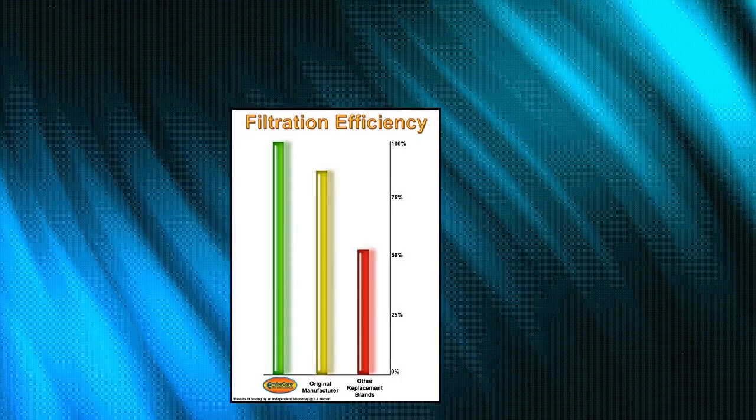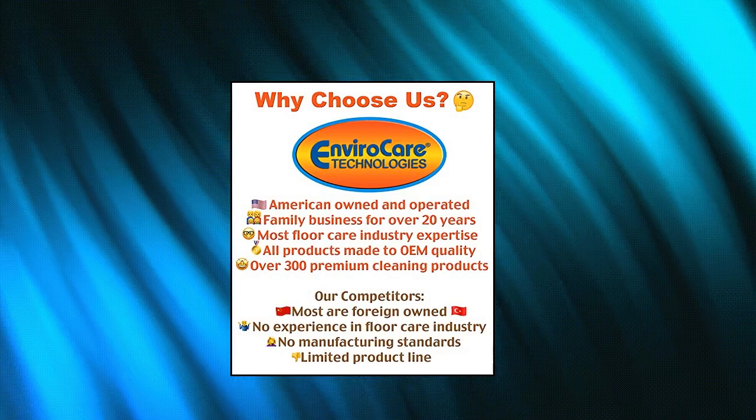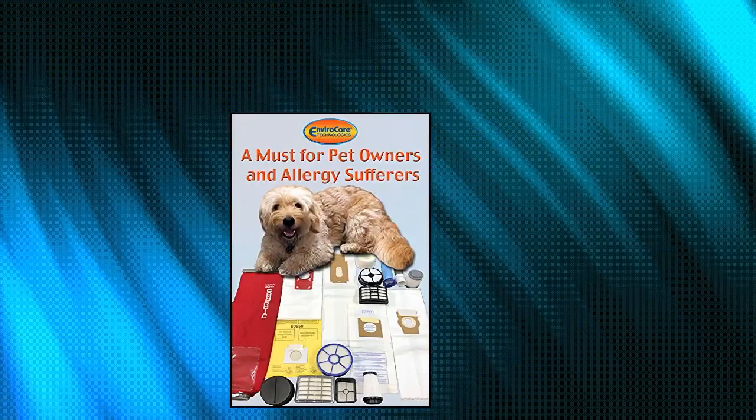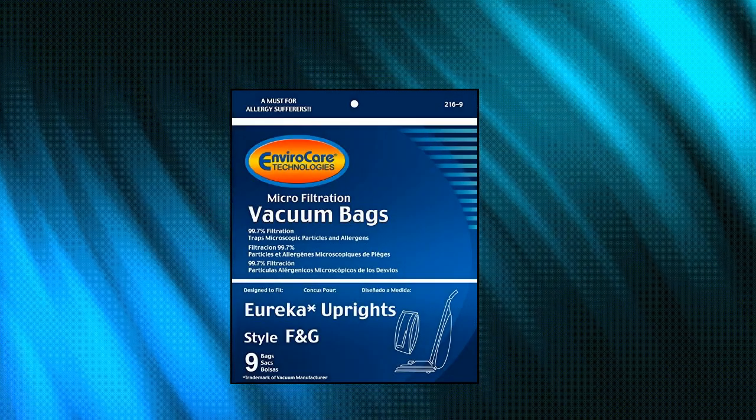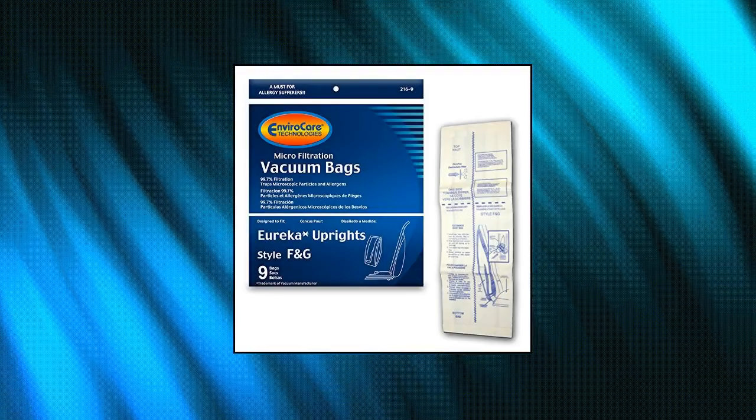EnviroCare Replacement Micro Filtration Vacuum Cleaner Bags Made to Fit Eureka F&G Sanitaire, Kenmore 5062, White Westinghouse, Koblenz, and Singer Sub 1. Commercial 9 Pack made to fit Eureka F.